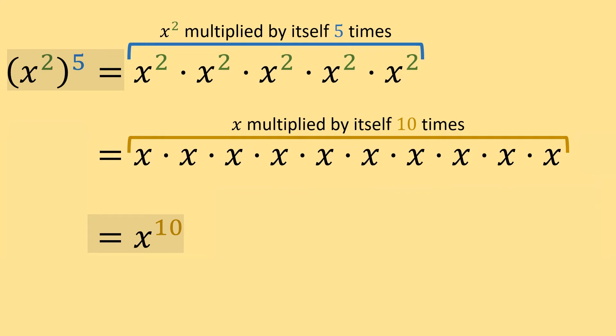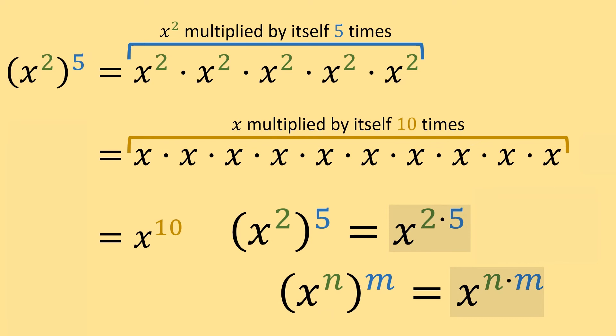Instead of expanding it over and over again, we could just use this rule here to jump to the final answer. In other words, using this rule, we could rewrite x squared to the fifth power as x to the two times five power, which is equal to x to the tenth power.